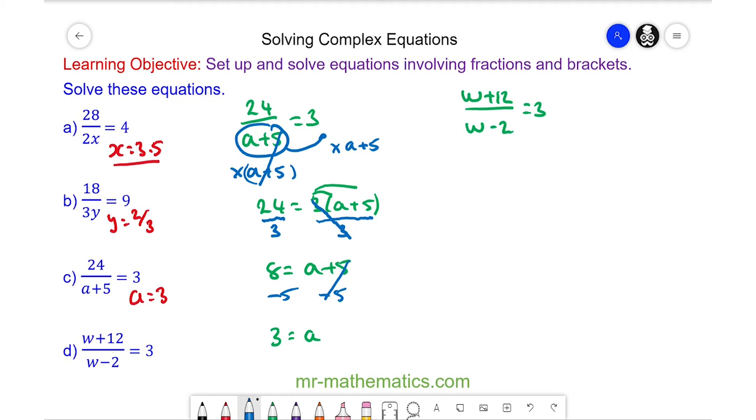We begin like we have the other questions. We move this division to the other side by multiplying both sides by w minus 2. So these will cancel. So we have w plus 12 is equal to 3 lots of w minus 2.